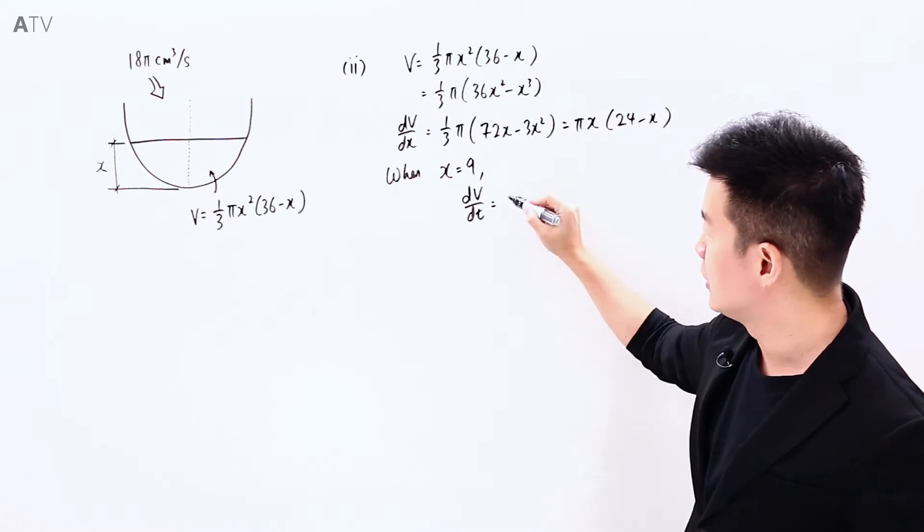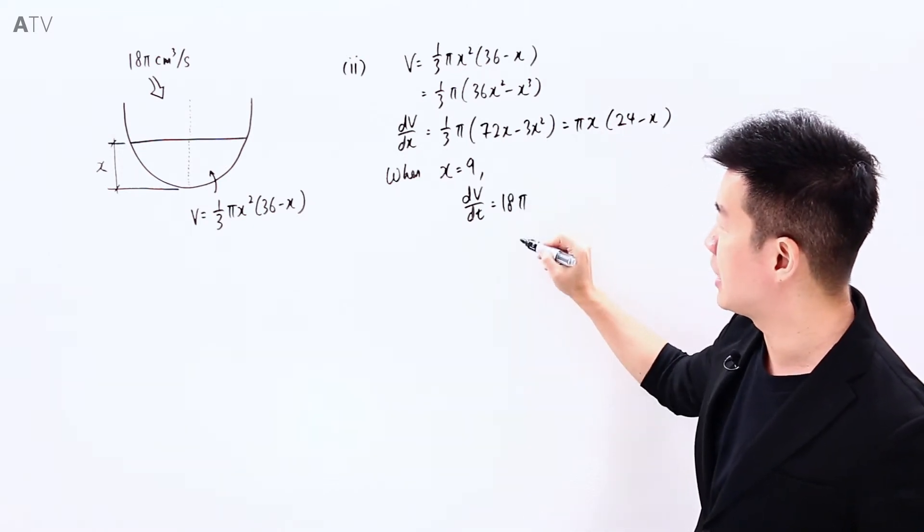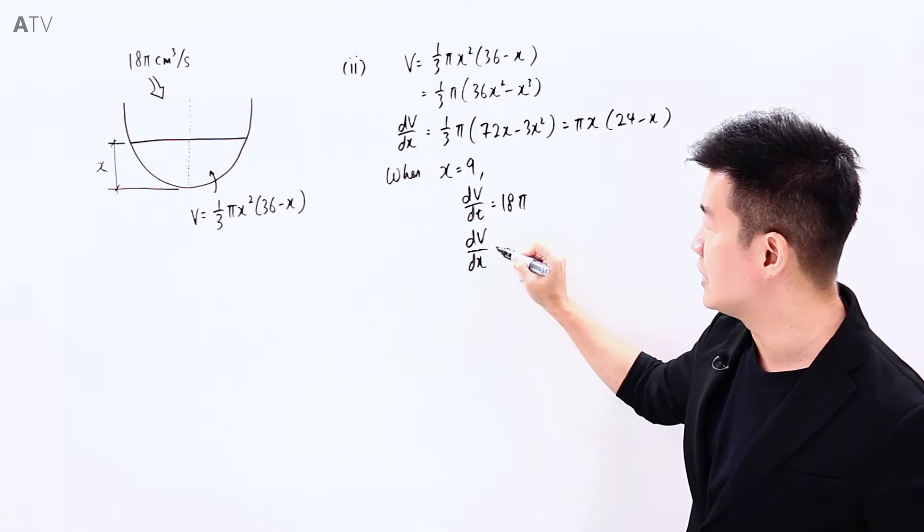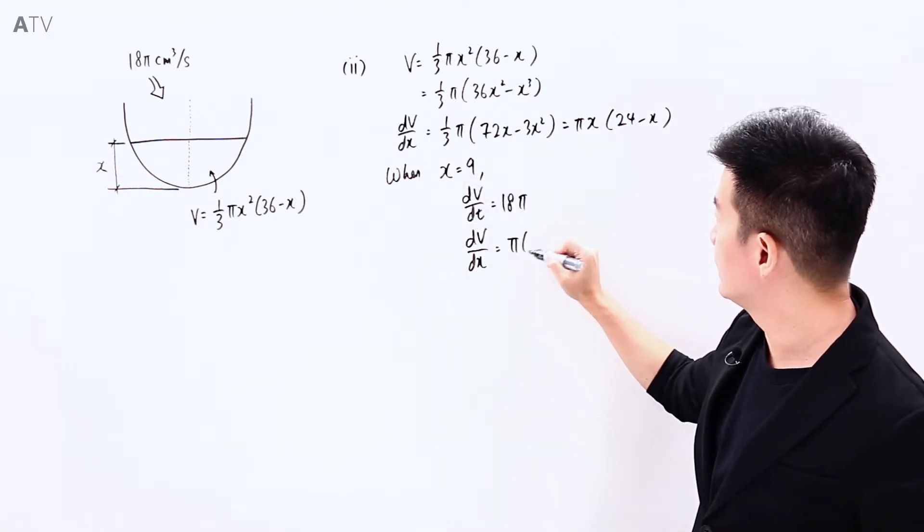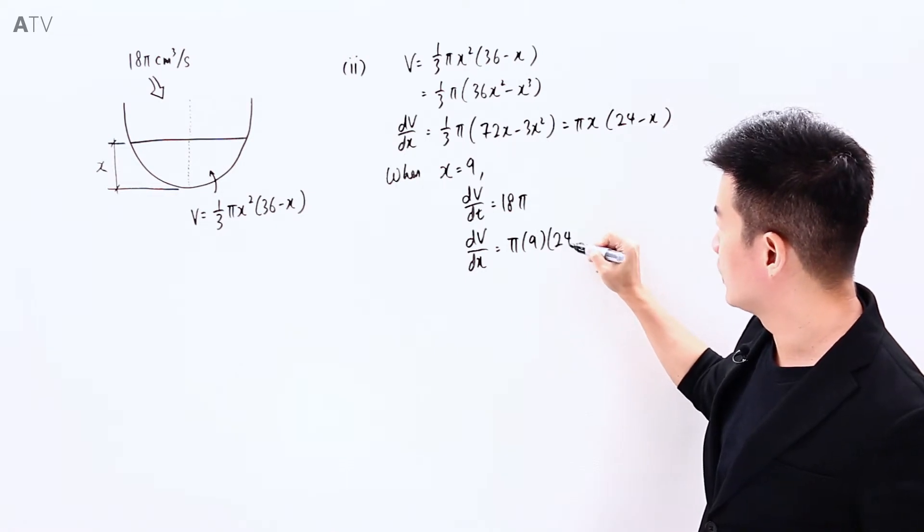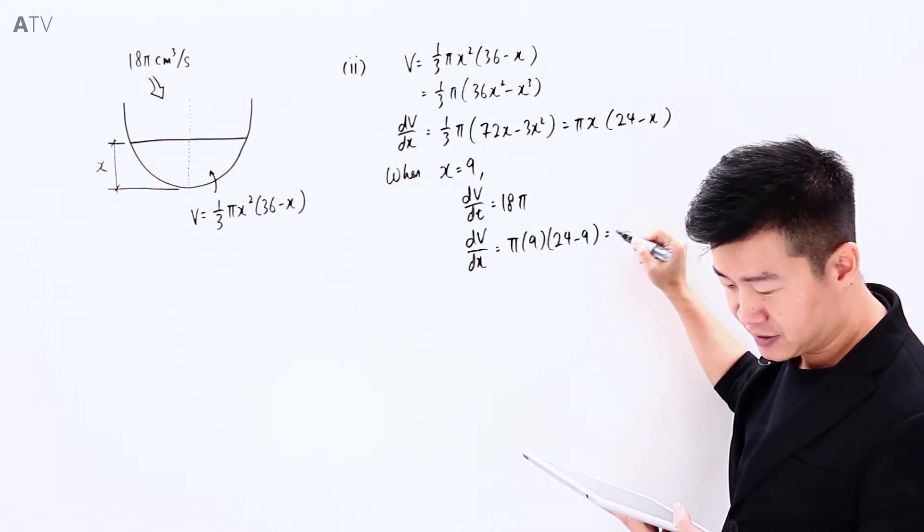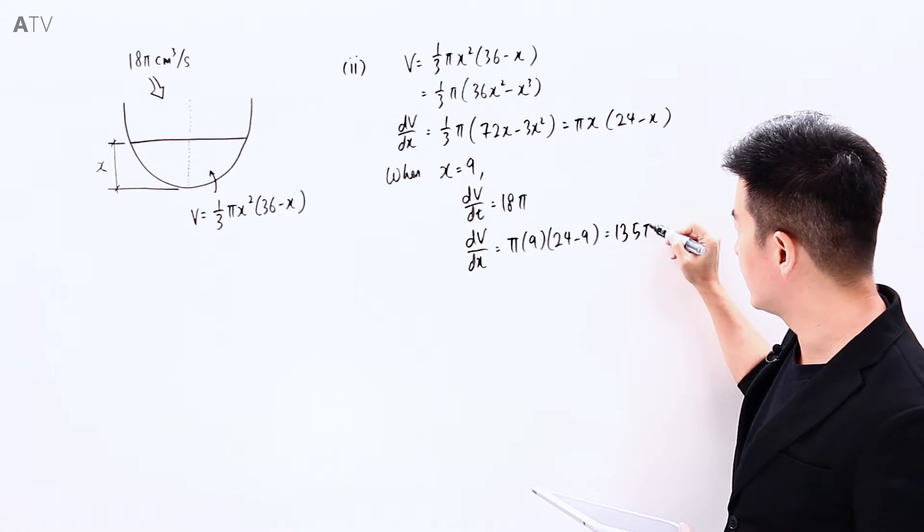So here this is 18π. Let's try to find the value for dV/dx. So substituting 9 into here, we have πx9(24-9), this is equal to 135π.